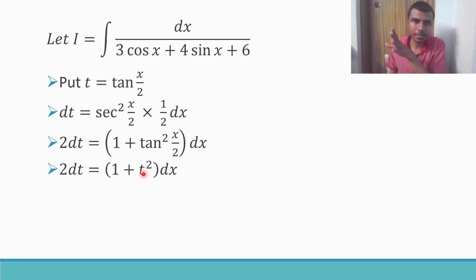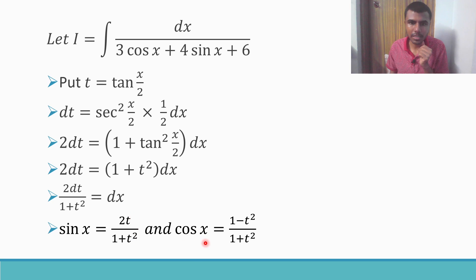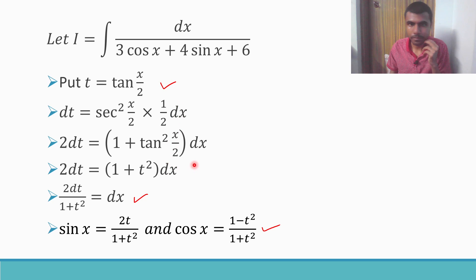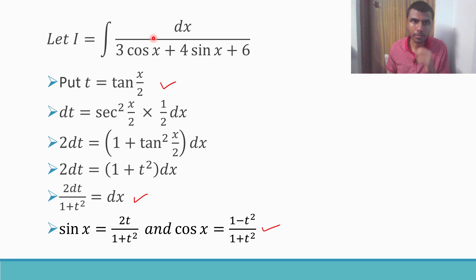So dx = 2dt/(1 + t²). Also, sinx = 2t/(1 + t²) and cosx = (1 − t²)/(1 + t²). I'm not going to derive these in full detail. In an exam you can just write these three results directly — they are given here just for your understanding, so you know why t = tan(x/2).